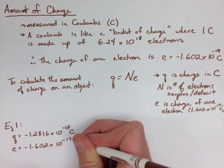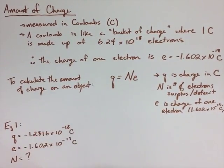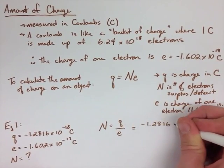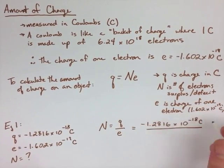So when we rearrange our equation from above, we get N equals Q over E. We substitute our values in, and we find that we have 8 extra electrons.